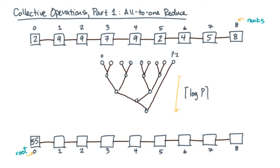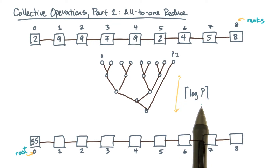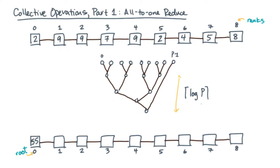Intuitively, you expect a tree-based scheme like this one to work well. Its span is logarithmic in the size of the input. In this case there are p values, and this observation suggests that you'll need to perform at least log p communication steps.